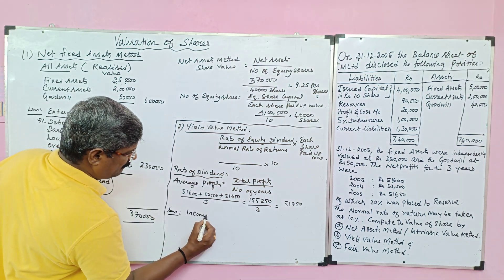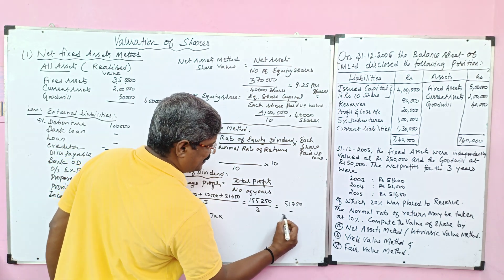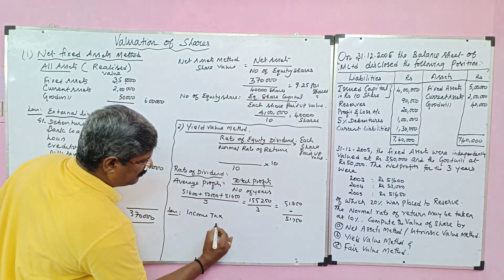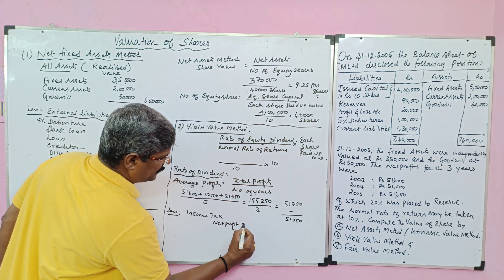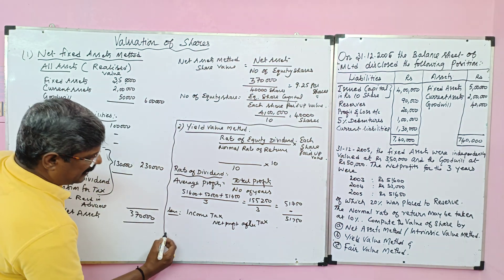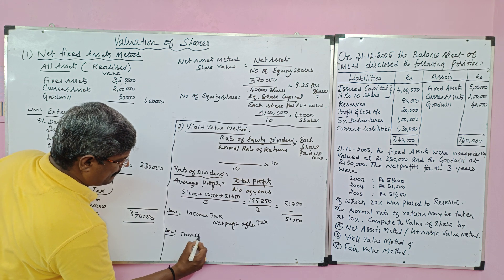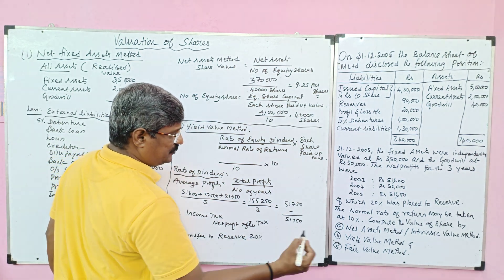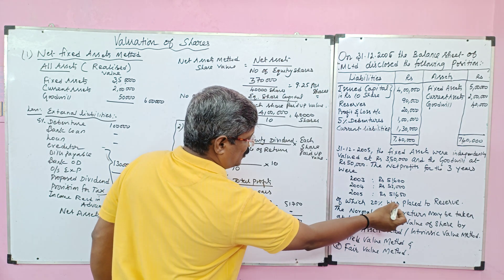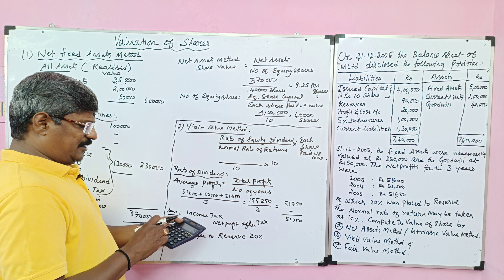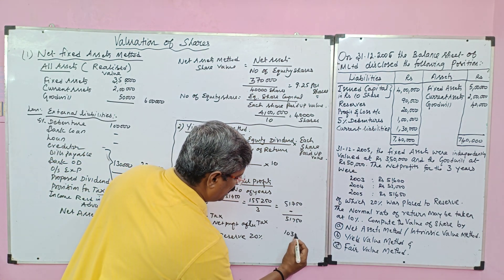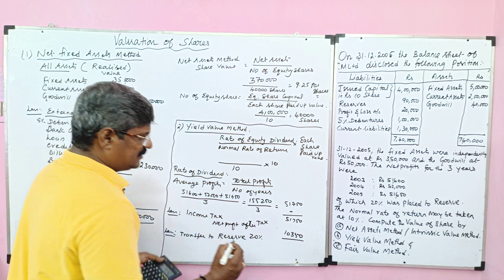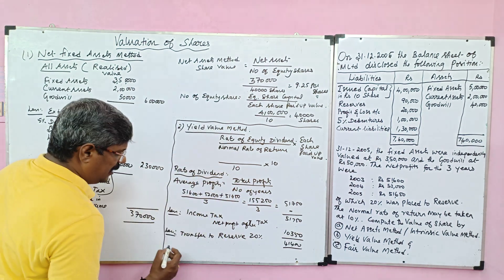From the average profit, we deduct income tax — but income tax percentage is not given, so income tax is nil. The balance is called net profit after tax, which is rupees 51,750. Then we deduct transfer to reserve: the company transfers 20% to reserve, so 51,750 × 20% = rupees 10,350. Balance net profit available to equity shareholders = rupees 41,400.